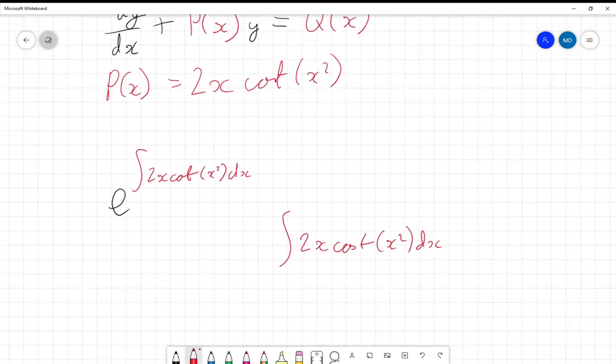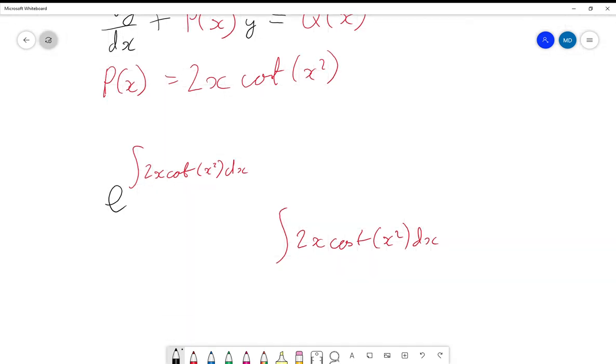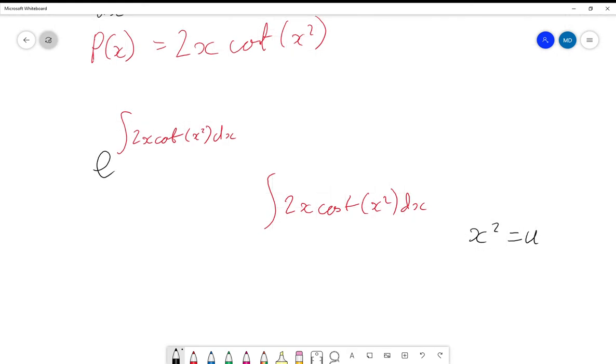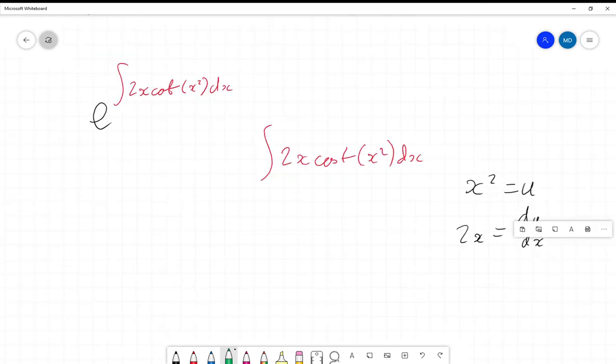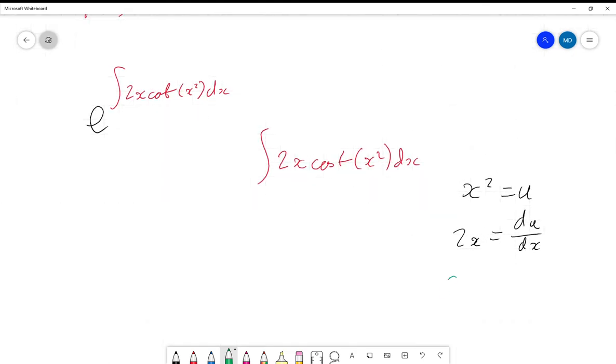And to deal with this I am going to be using a substitution of x² = u. Which will then give me that du/dx = 2x and then rearranging that I get dx = 1/(2x)du.